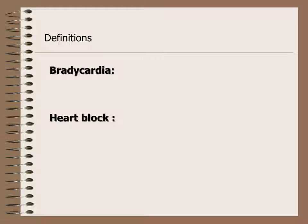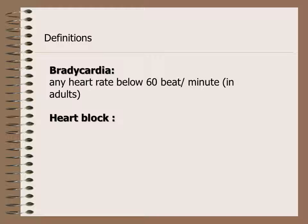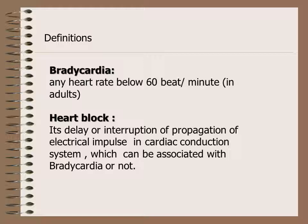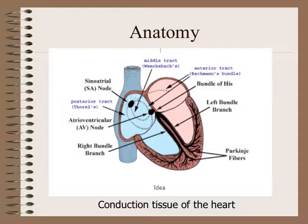We will start by defining bradycardia and heart block. By bradycardia, we mean any heart rate below 60 beats per minute in adults, as in children they have higher rates to be considered as bradycardia. By heart block, we mean any delay or interruption of propagation of electrical impulse in cardiac conduction system, which can be associated with bradycardia or not.